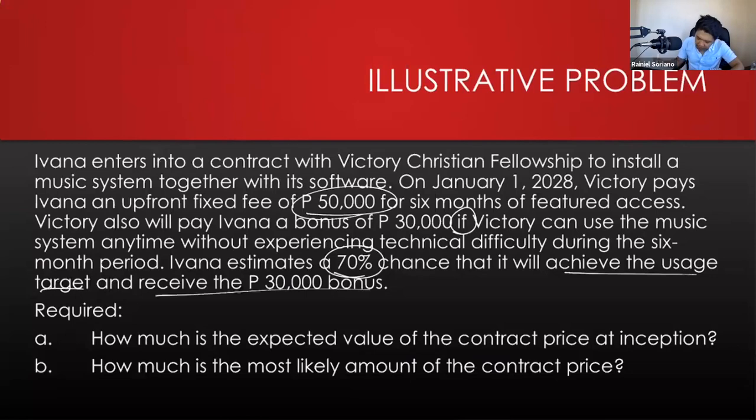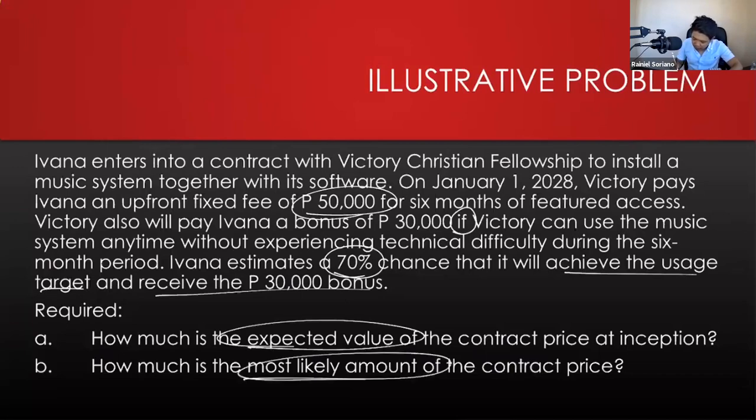Ivana estimates a 70% chance that it will achieve the usage target and receive the 30,000 bonus. Requirement A: how much is the expected value of the contract price using the expected value approach? Requirement B: how much is the most likely amount of the contract price? Under the expected value approach, we get the sum of all possible amounts multiplied by their corresponding probabilities.